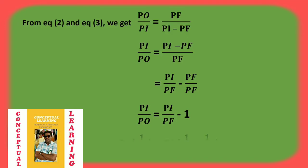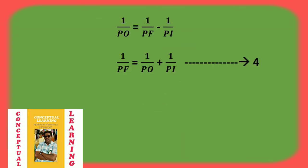From this, 1/PO = 1/PF − 1/PI. Rearranging, 1/PF = 1/PO + 1/PI, which is equation number 4.